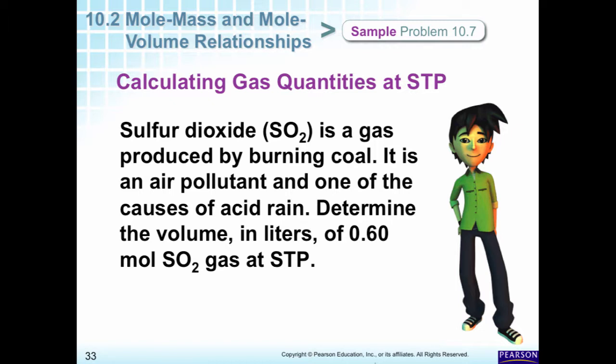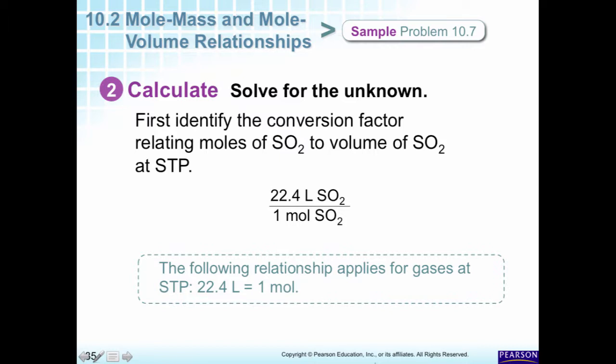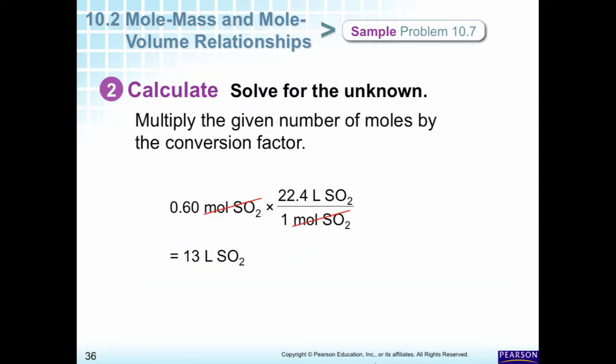So notice this problem. What do they have at the very end of this problem before you see anything? Gas at STP. So that tells you, I can use 22.4 liters because of that. Determine the volume in liters of 0.60 moles. So let's see what they gave us. We know that since it's at STP, we can use this conversion, and we know how many moles, so it's going to be a one-step process. We want to get rid of moles and get liters, 0.6 times 22.4 divided by one, and we get 13 liters. It's smaller than a mole, so we should have less than 22.4 liters, it makes sense.